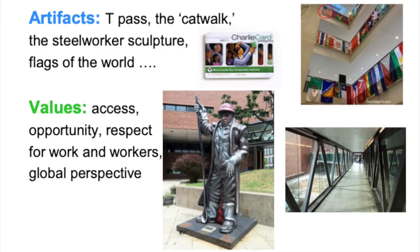You're probably chuckling already at the familiarity of these images. As insiders, we get it — we might have to explain to someone else, but to us, these are things that just say UMass Boston. When we're on campus, we take them for granted, and when we're away, we might find ourselves missing them. See how the artifacts link to the values: the T-pass says access; the catwalk says access and metaphorically a pathway to going places, opportunities, things to do.